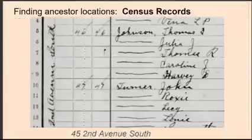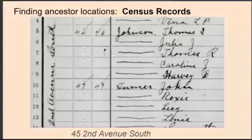You can find ancestor locations in census records as well. This is the 1910 U.S. Census for Noma, Holmes County, Florida. You can see on the left side of the image the address written sideways — the street name, which was 2nd Avenue South. The street numbers are usually to the left of the house number in the order the census taker went. The disadvantage to census records is that they were only taken every 10 years.